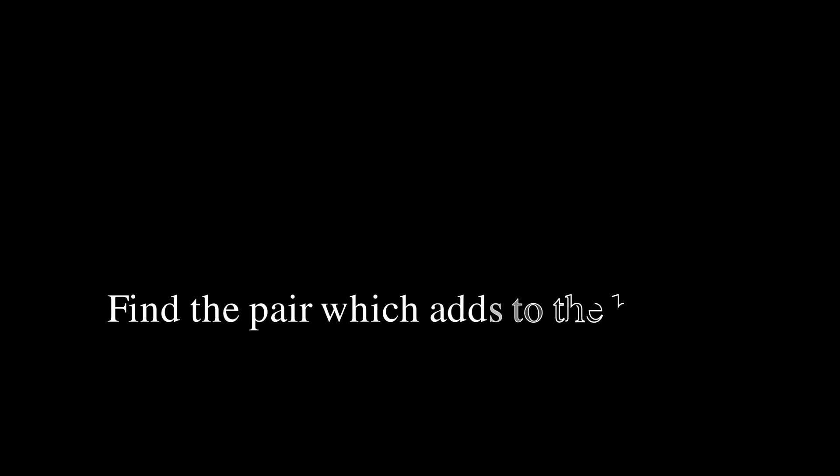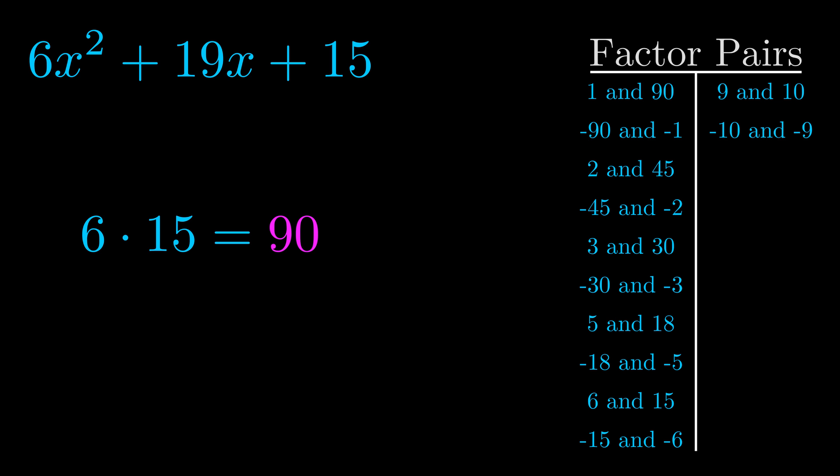The b value is the coefficient on the x term. That's the middle term, the one that we haven't done anything with yet. And really this is the only factor pair that we need.